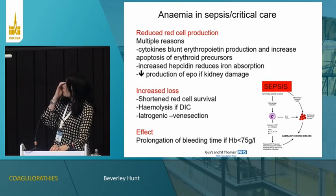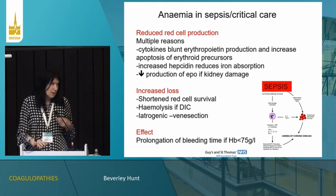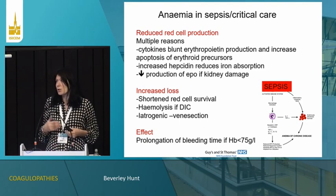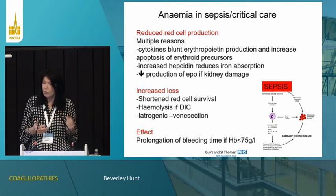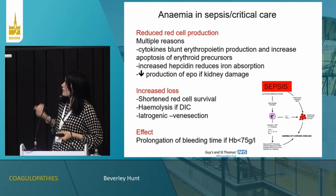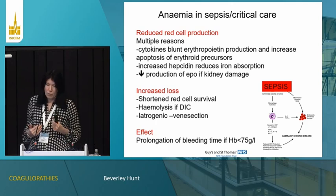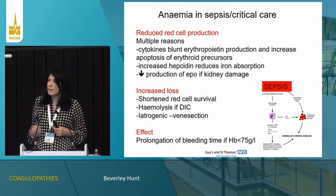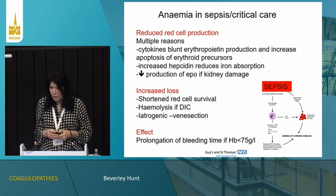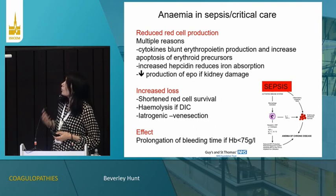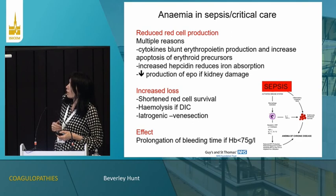Anaemia is important and common in septic patients. We have anaemia of chronic disease with reduced production, cells that aren't quite so good, and a blunted response to erythropoietin — all the cytokines of sepsis will limit the effect of erythropoietin. And of course, if you get a DIC you're getting haemolysis over the strands of fibrin.